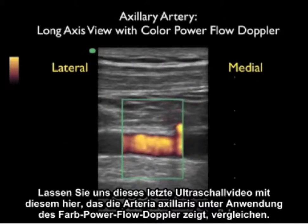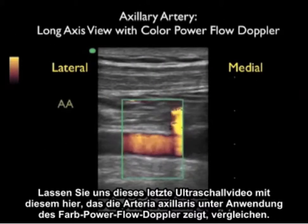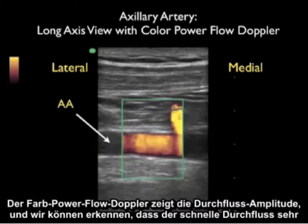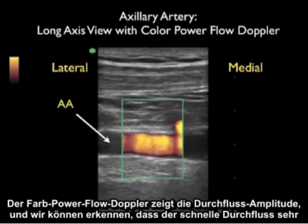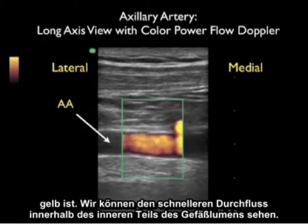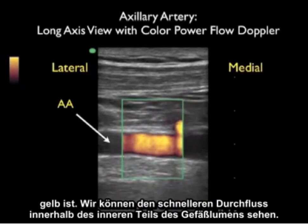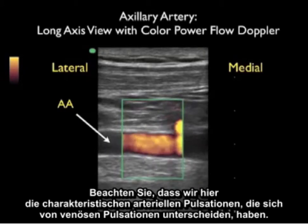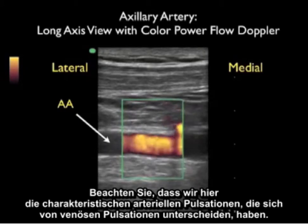Contrasting with the axillary vein, here is the axillary artery using Color Power Flow Doppler. Color Power Flow Doppler shows amplitude of flow — faster flow appears very yellow and is visible within the inner part of the vessel lumen. The characteristic arterial pulsations clearly differentiate this from venous flow.